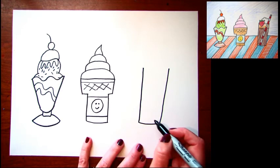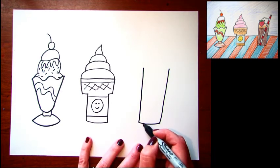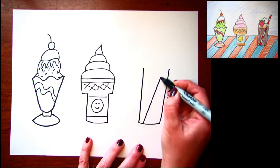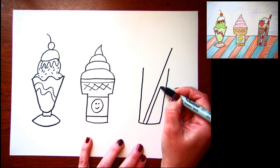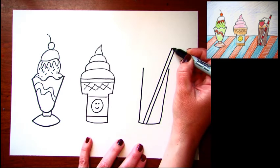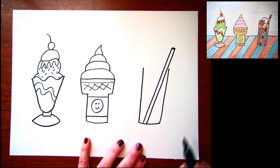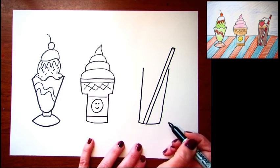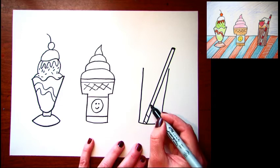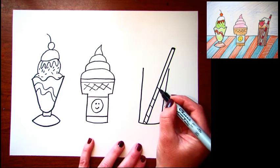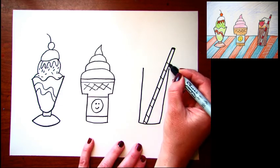And before I do the top of it I'm gonna add a straw that goes in there. I'm gonna make my straw go out at an angle, it's just two lines that follow the same path. And I'll add a little design on mine, the little candy stripes. I bet you've seen those before.